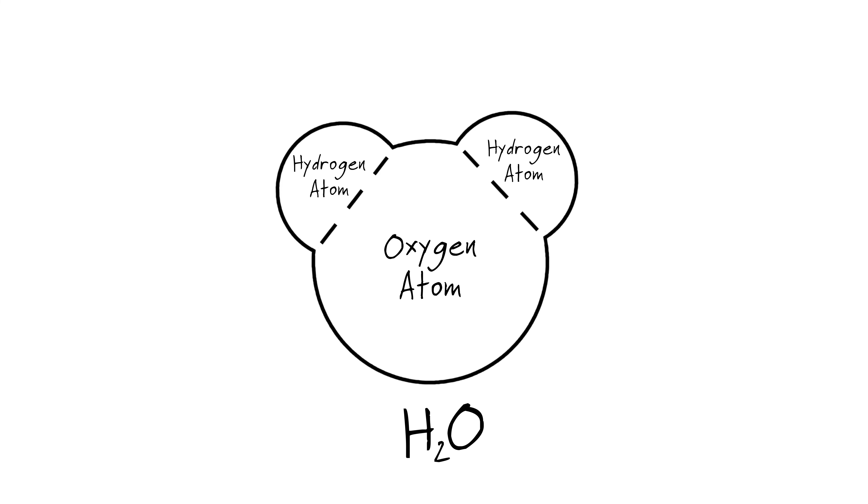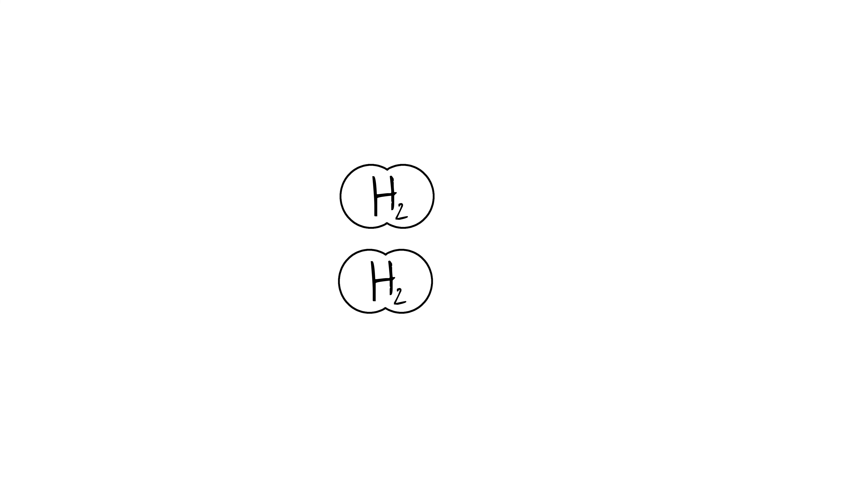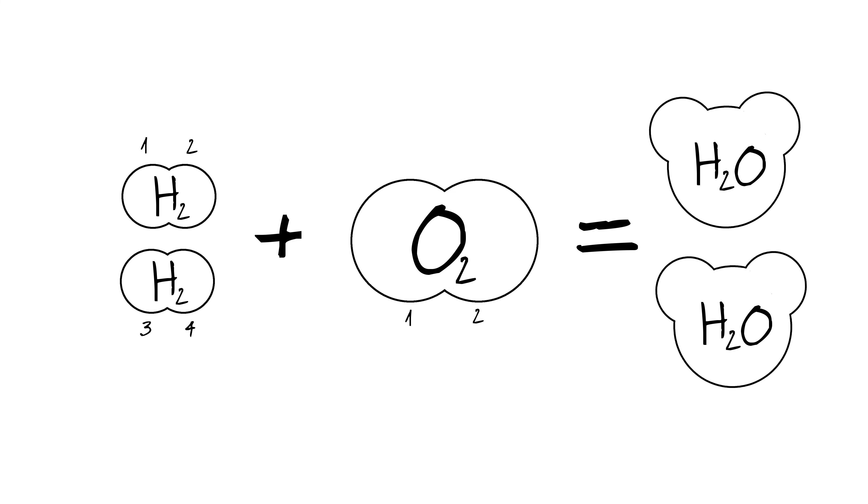What does this mean for our combustion reaction? Well, in order to be as efficient as possible, we will need to have exactly twice as many hydrogen molecules as we have oxygen molecules. Thus, for every two H2 molecules and one O2 molecule, we will have four hydrogen atoms and two oxygen atoms, which, as a result of combustion, reassemble into two H2O molecules.